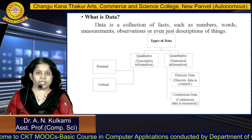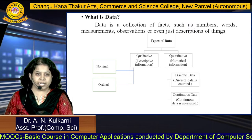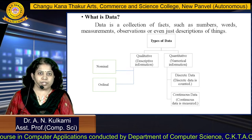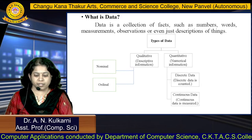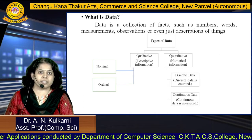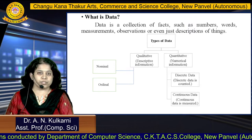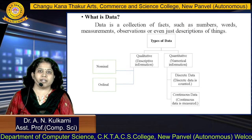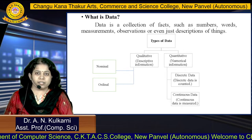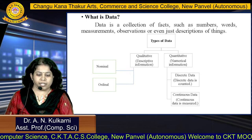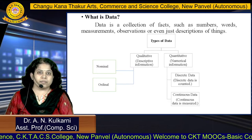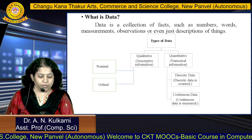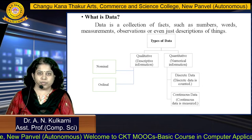There are different categories of data. First is qualitative and second is quantitative. Qualitative is descriptive information, while quantitative is numerical information. Under qualitative, there are two categories: nominal data and ordinal data. Under quantitative, there are also two categories: discrete data, which we can count, and continuous data, which we can measure.